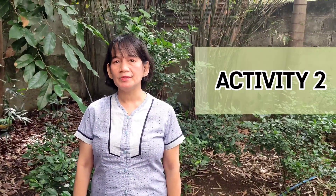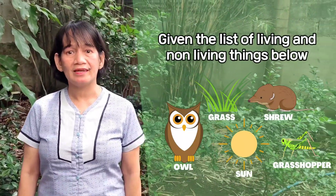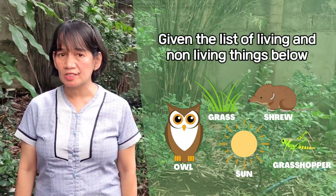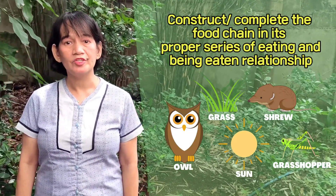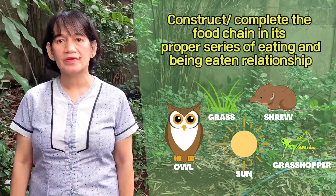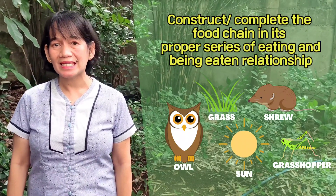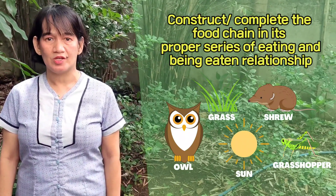Now let's answer another activity to determine your understanding about food chains. For activity number two, given the list of living and non-living things below, construct and complete the food chain in each proper series of eating and being eaten relationships.